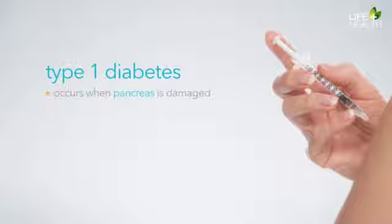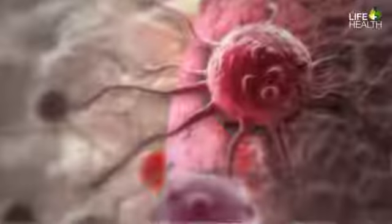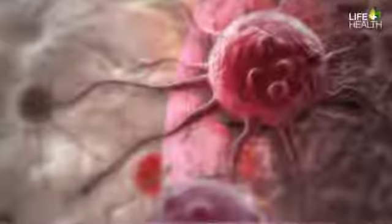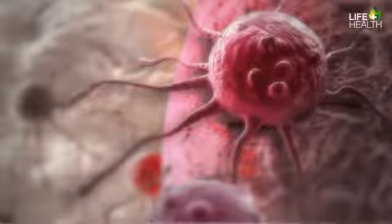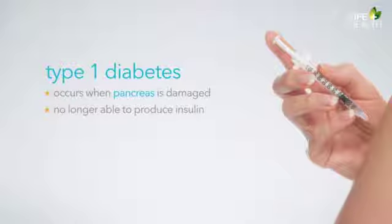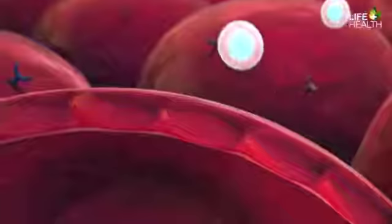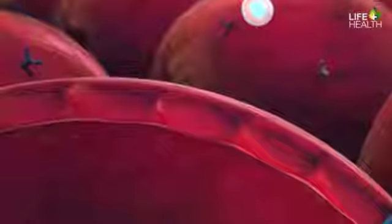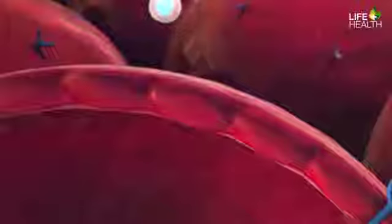Type 1 diabetes occurs when the pancreas is damaged. This can be caused by a virus or an autoimmune reaction, which occurs when the body accidentally destroys its own cells while trying to protect itself from an infection or a foreign substance. Because the pancreas is damaged, it is no longer able to produce insulin. Without insulin, glucose in the bloodstream has no way of entering the cells — it quickly builds up, causing high blood sugar. This can cause serious health complications if it isn't addressed quickly.